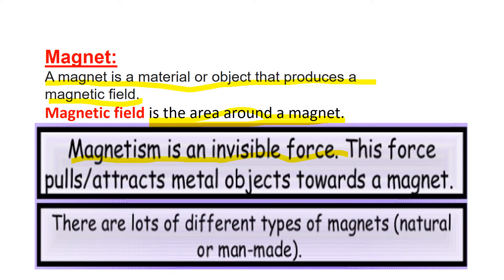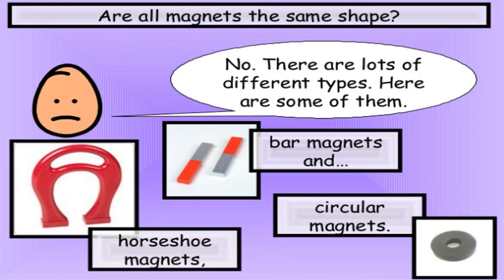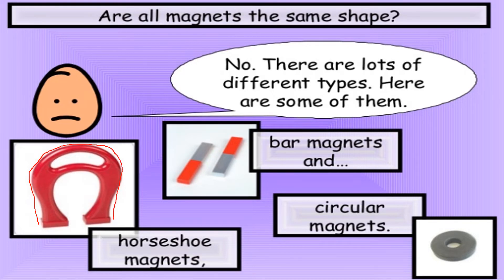There are lots of different types of magnets — some are natural and some are man-made, and they come in different shapes. Look at this one: this is called a horseshoe magnet. Horseshoe means it is like a U shape. This is a U-shape magnet.